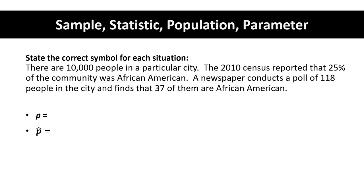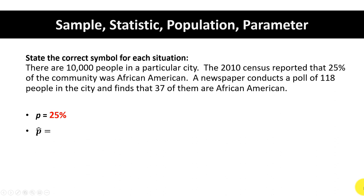There are 10,000 people in a particular city. The 2010 census reported that 25% of the community was African American. A newspaper conducted a poll of 118 people in the city and found that 37 of them are African American. P is a parameter — it is the population proportion. A census asks everyone in the population, and it turned out 25% of that population was African American. So P, the population proportion, is 25%. P-hat is the sample proportion; it is a statistic. That is the 37 out of 118 in the poll, which works out to be about 31%.